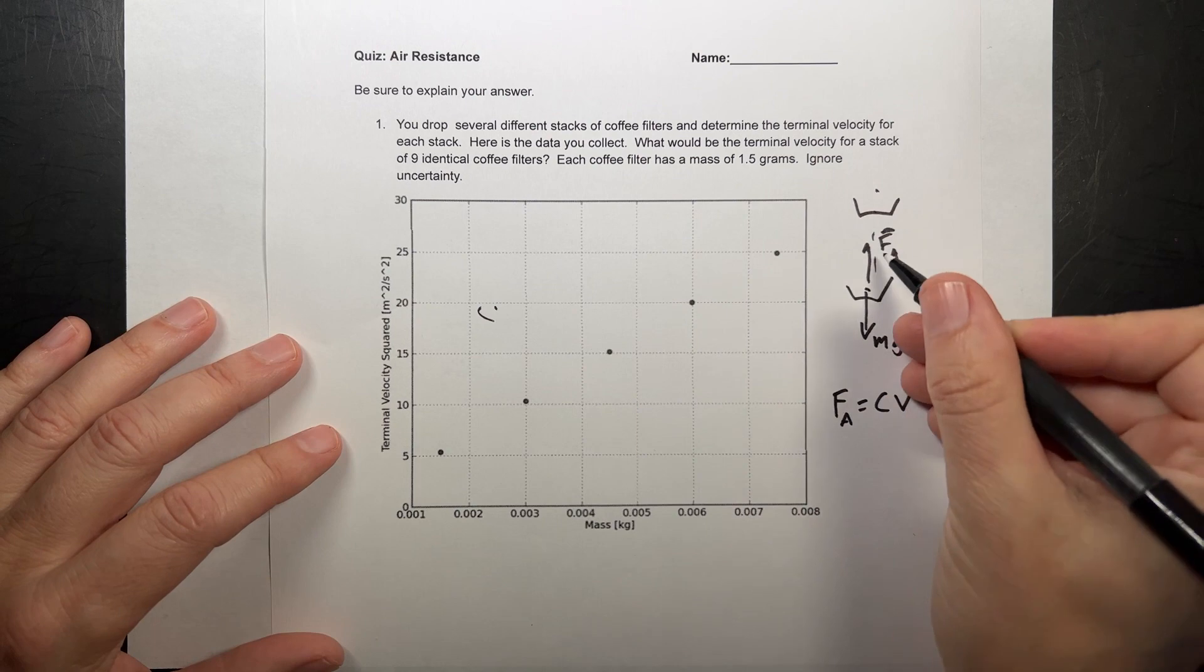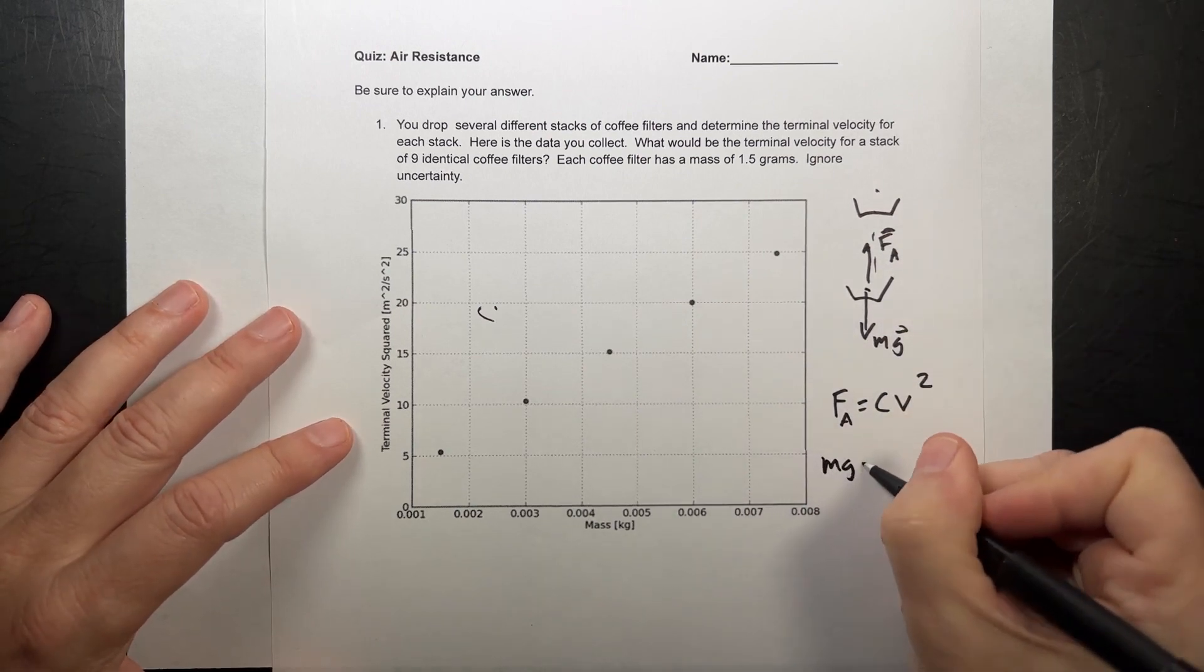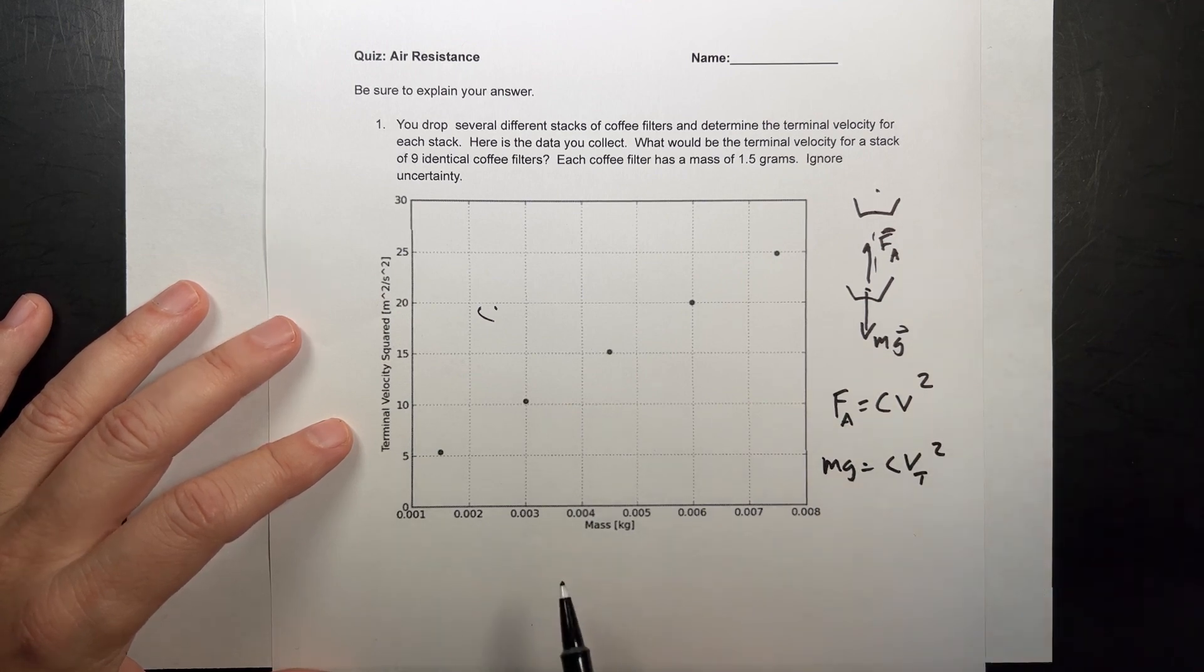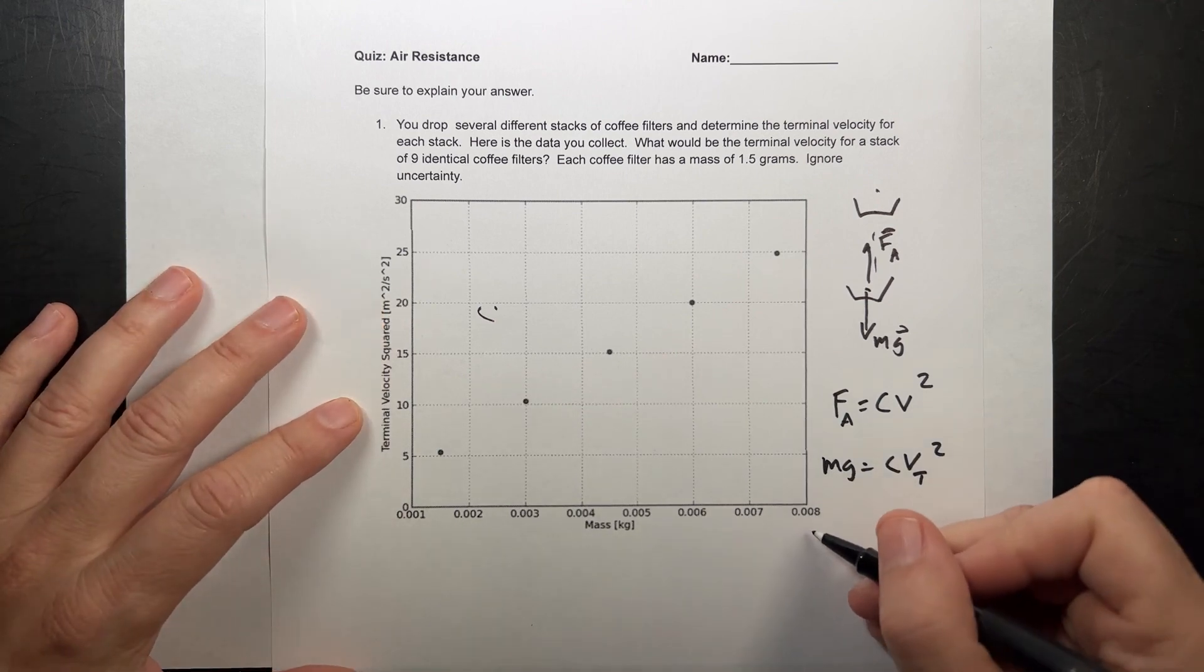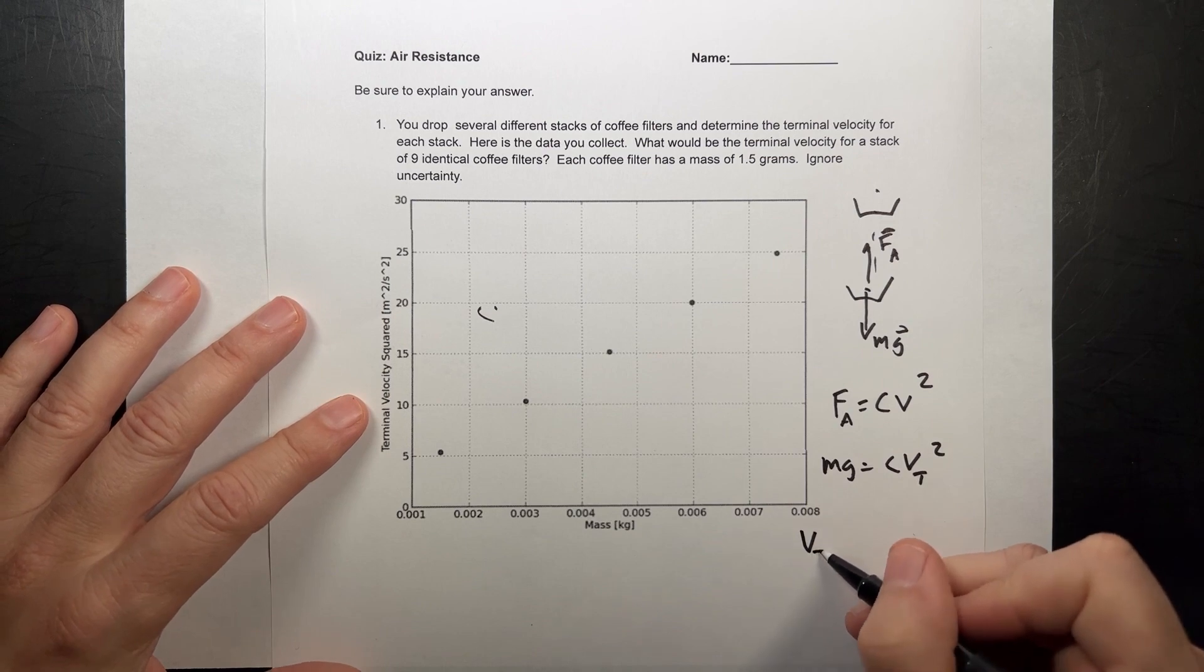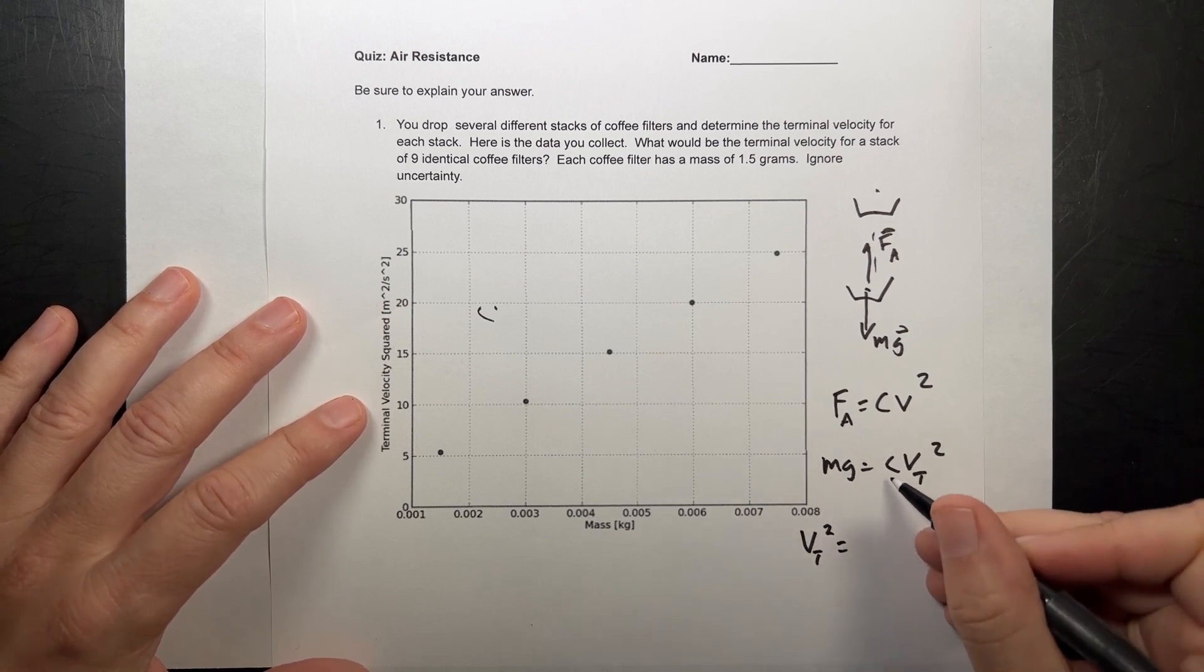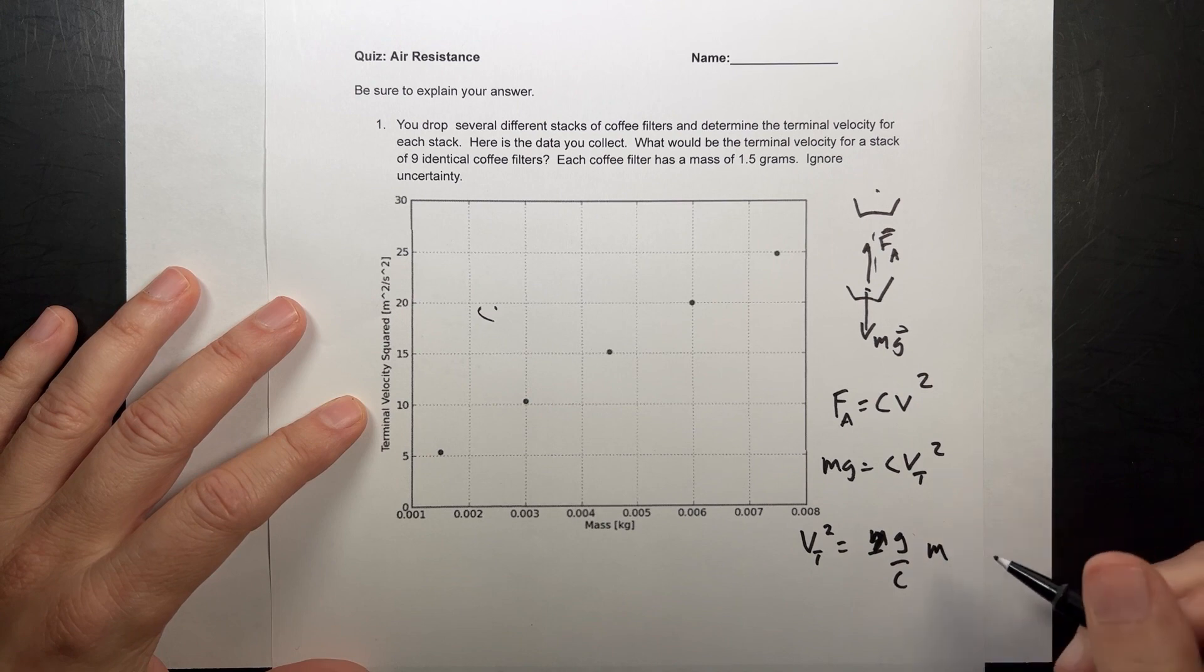So I have mg equals CV_T squared. That's true at terminal velocity. And so if I am plotting mass on the horizontal axis, like my x value, and velocity squared on my y, I can say V_T squared y is going to be equal to m, sorry, g over c times m.